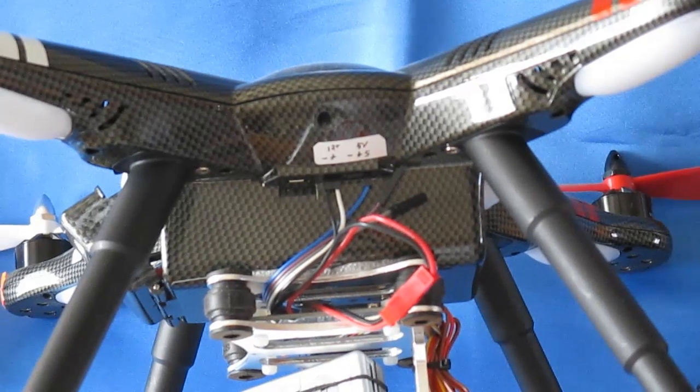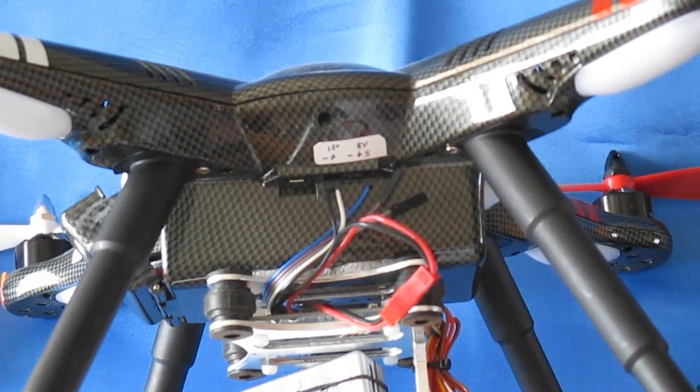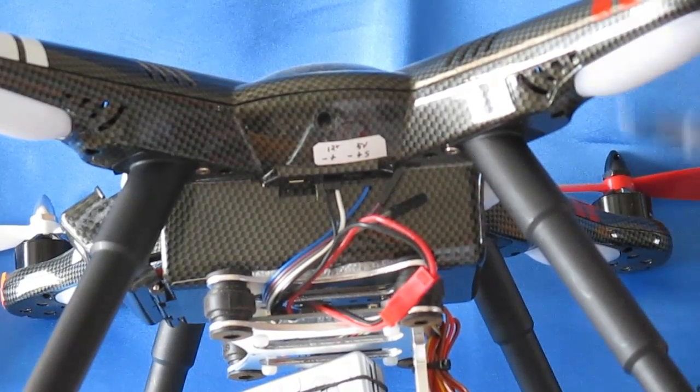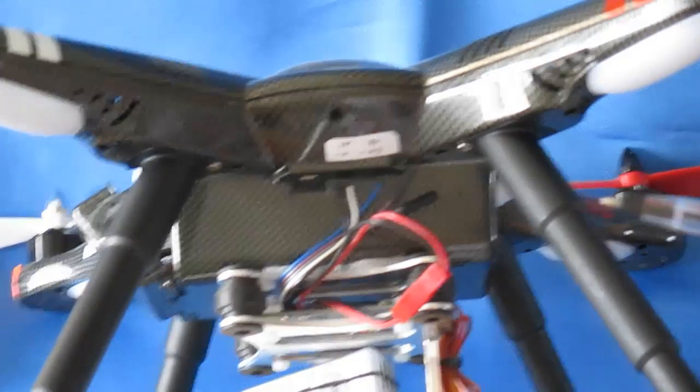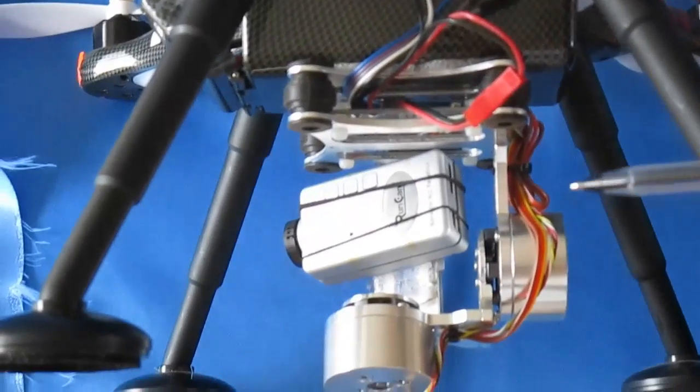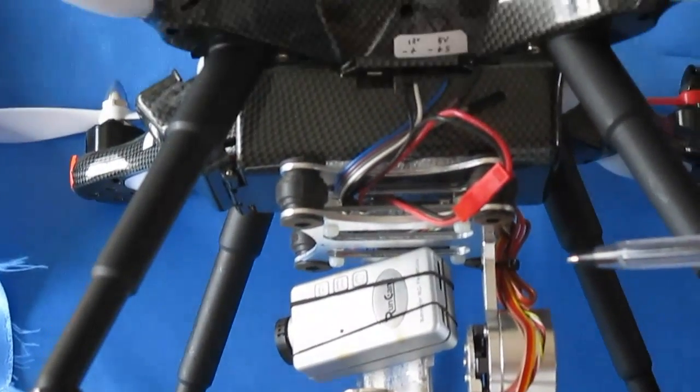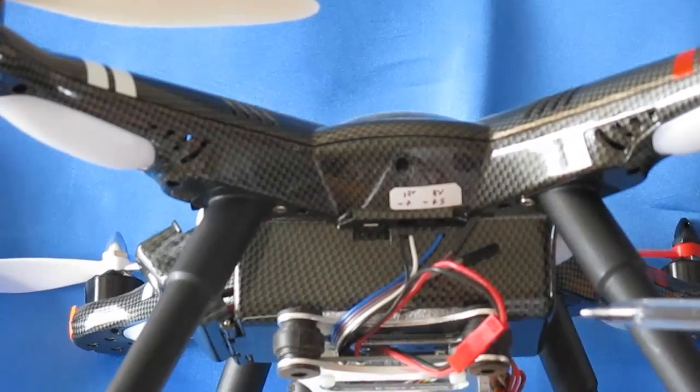Good afternoon, Quadcopter 101 here. I've received some requests for showing how to hook up the gimbal system on the X380. In particular, this is that cheap $45 gimbal system that I got here. And how did I hook it up to my X380?